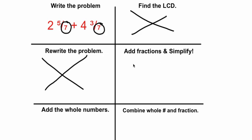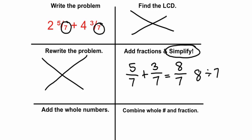And in this box we're going to add the fractions as normal. So five-sevenths plus three-sevenths is eight-sevenths. So we added our fraction now we're going to simplify. Eight-sevenths is an improper fraction so we need to change that to a mixed number. So eight divided by seven is going to be one and one-seventh.